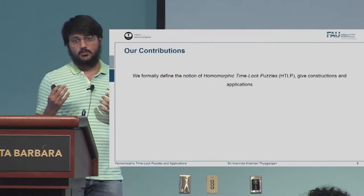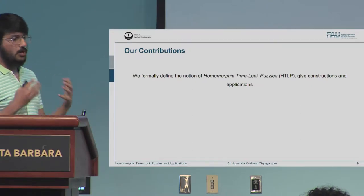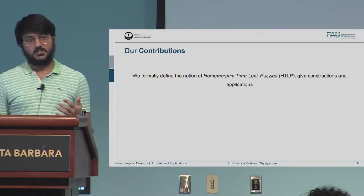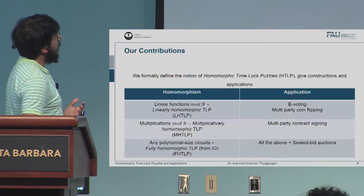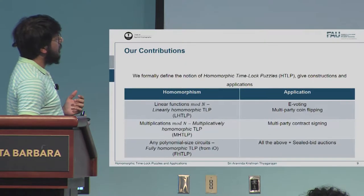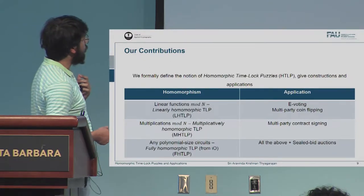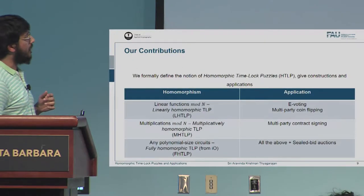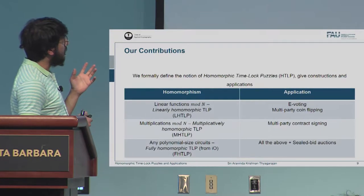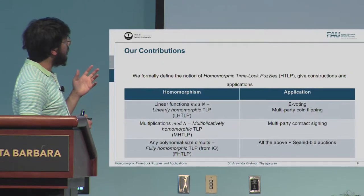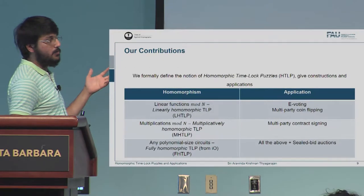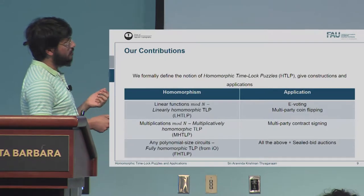It's time to highlight our contribution. We formally proposed the notion of homomorphic time-lock puzzles, give candidate constructions for different homomorphisms, and also identify key applications. We give three constructions: namely for linear homomorphism, multiplicative homomorphism, and as a feasibility result, we show a fully homomorphic time-lock puzzle. As applications, we identify e-voting and multiparty coin flipping for our linear construction, contract signing for the multiplicative construction. With the fully homomorphic construction you could achieve all these applications, but we care for practical efficiency, so the specialized constructions make sense.